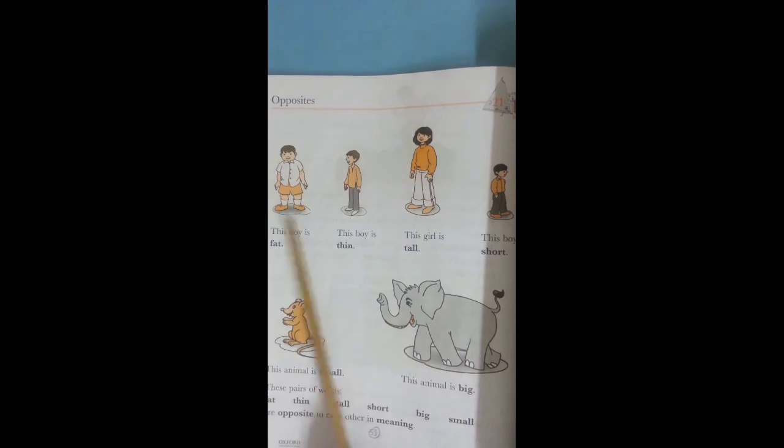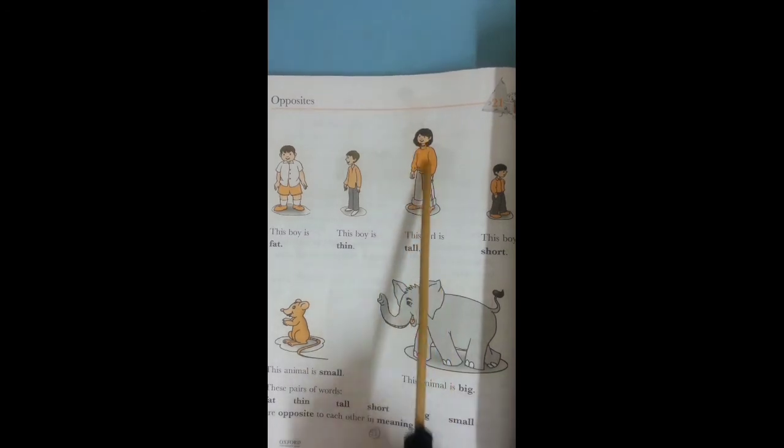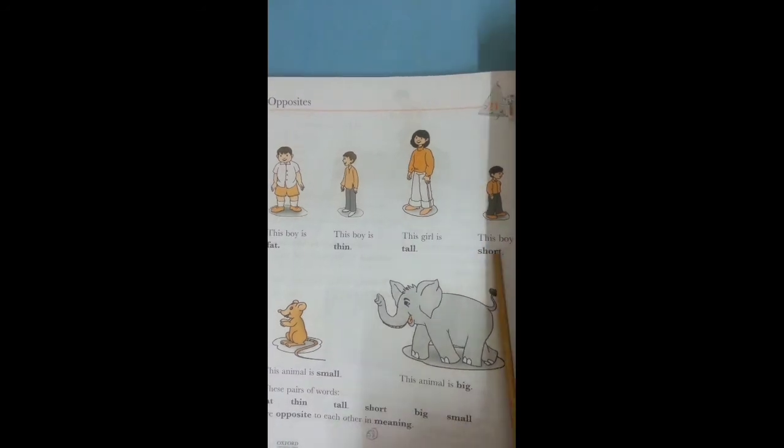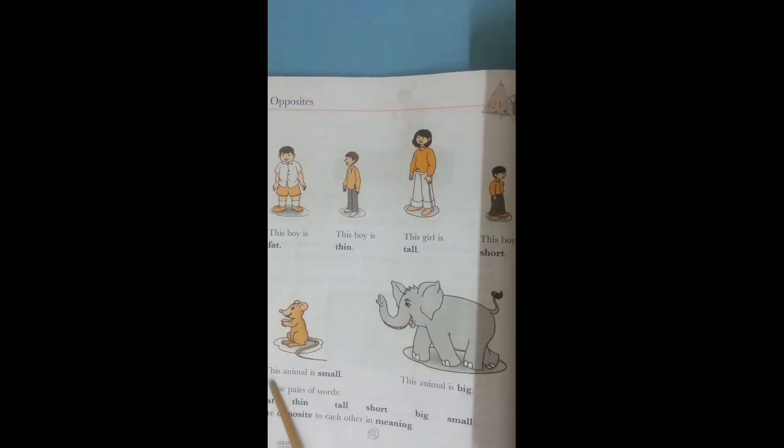Now open your page 58 and let's start our new topic: Opposites. We already learned this topic in our previous class. Look at this boy. This boy is fat, and the opposite word of fat is thin. This boy is thin. Look at this picture. This girl is tall. This boy is short.